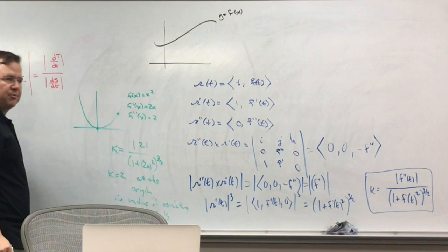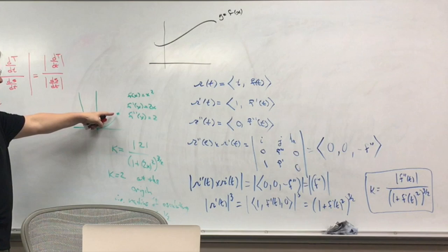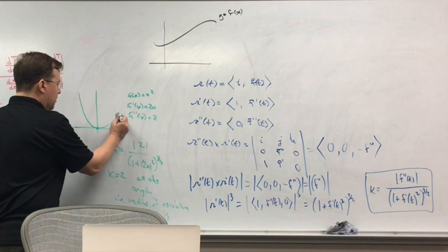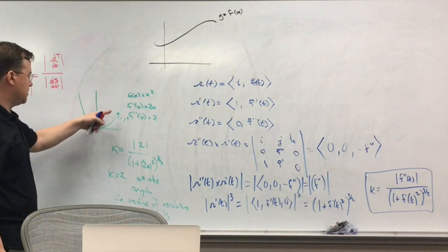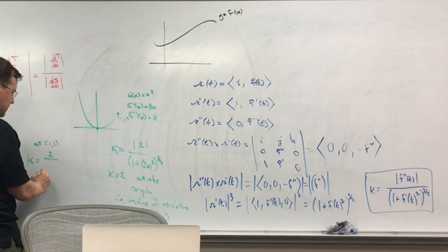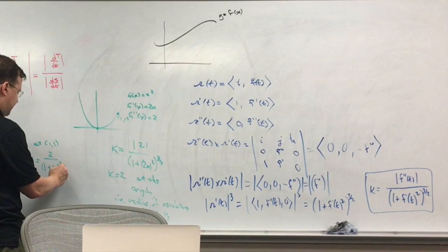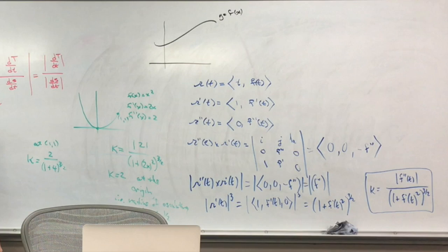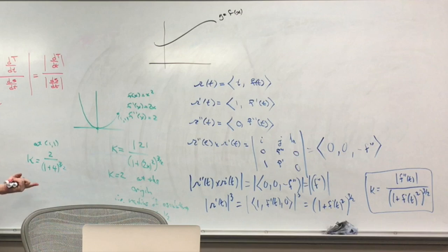Now I can easily find the curvature at the point (1,1): it's 2 over (1 plus 4) to the three-halves, which is 2 over 5 to the three-halves. That's less than 2, as expected. The radius of the osculating circle there would be 5 to the three-halves over 2. Also, if s(x) equals square root of x, when you plug in x equals 1 at the point (1,1), you should get the same curvature — 2 over 5 to the three-halves — because both curves pass through (1,1) with the same shape.